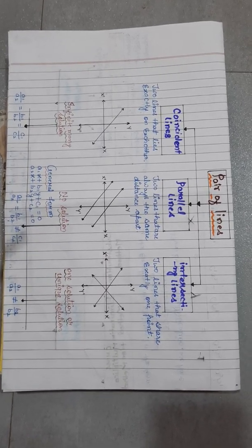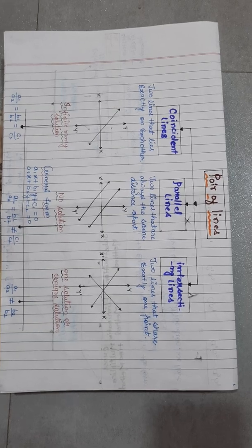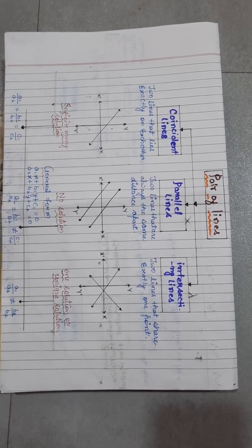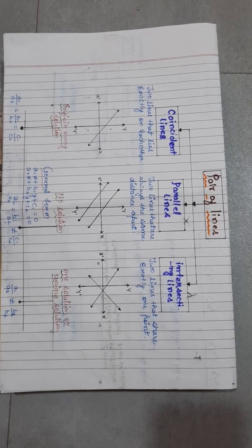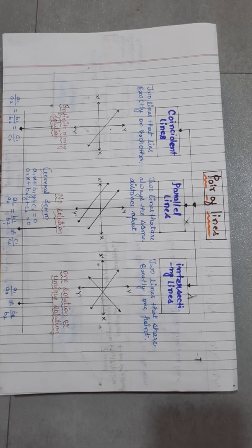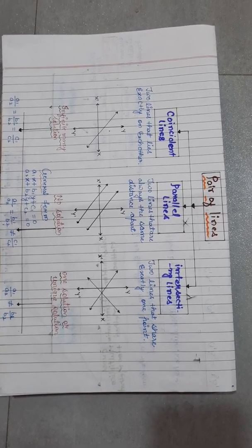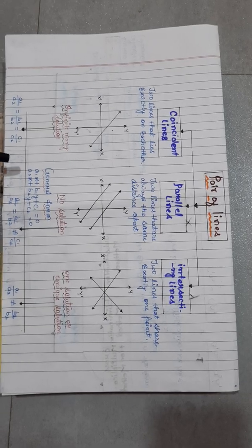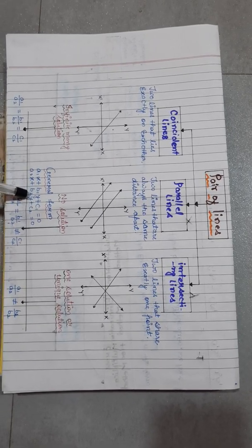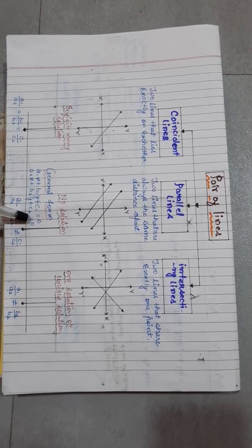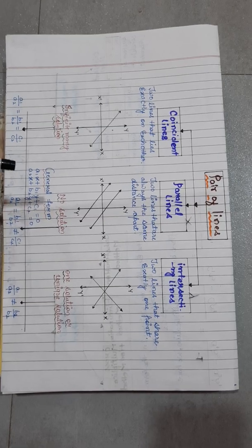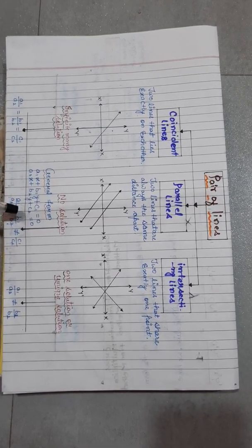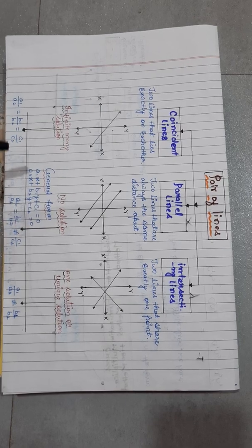Before we begin with any condition, we need to know about the general form of linear equations in two variables. The general form is: a1x plus b1y plus c1 is equal to 0, and a2x plus b2y plus c2 is equal to 0.